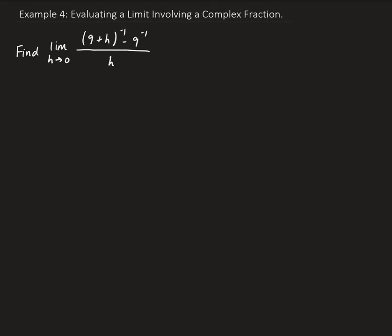In this example, we're going to find the limit of the function that we see here. So first thing to do, let's do a direct substitution and see what we get. So when we substitute h for zero, we end up getting nine plus zero minus one minus nine to the negative one all over zero — basically nine to the negative one minus nine to the negative one all over zero — so we get zero over zero, which is an indeterminate result.